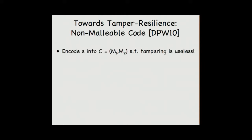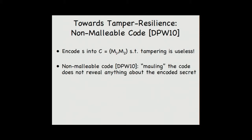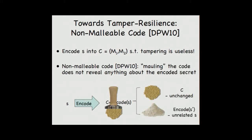The idea is we encode some string S into some code C, and because we are considering split state model, that will be M1, M2, such that tampering on the code word is useless. The high-level idea of non-malleability is saying that the code word does not reveal anything about the encoded secret. Consider the following experiment: you have a string S which gets encoded to some code word. Consider this tampering experiment where you tamper with the code word. It can result only in two cases: either you didn't hit the code, so you leave it unchanged, otherwise you can totally destroy the information of S, so you can result in something totally unrelated.